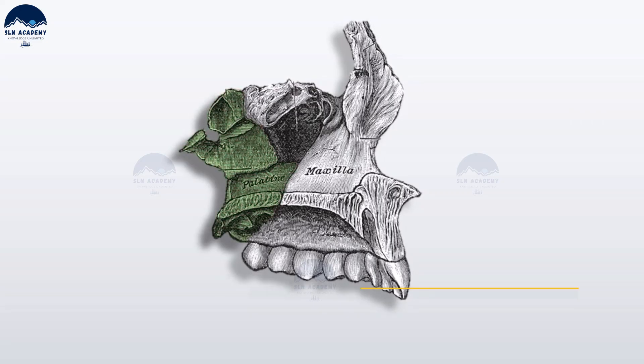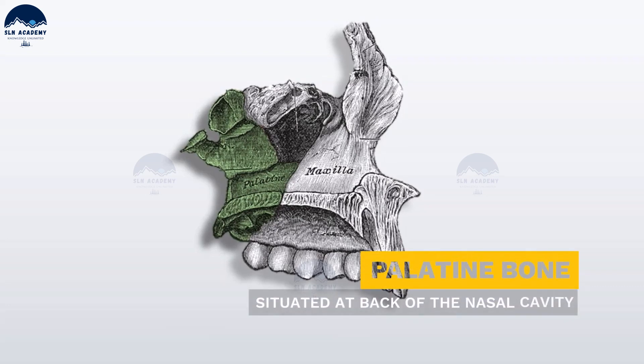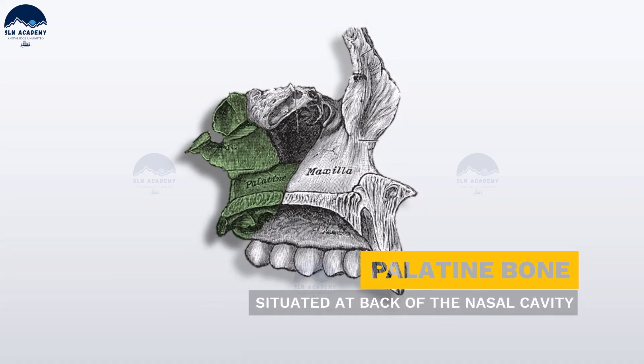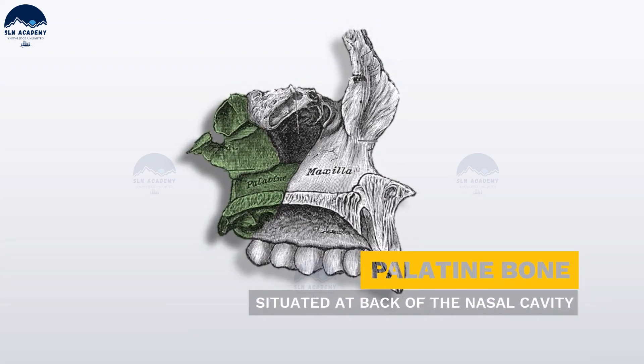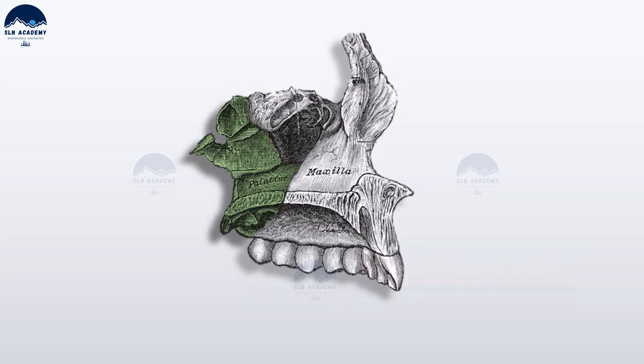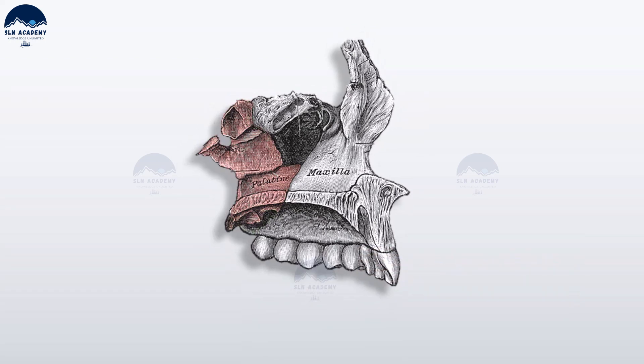Palatine bones. There are two irregular palatine bones in the roof of the mouth. They are situated at the back of the nasal cavity.